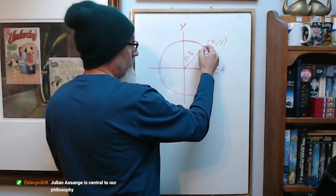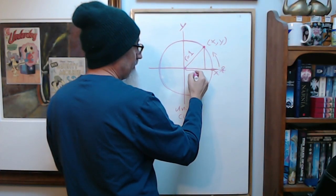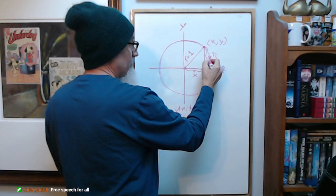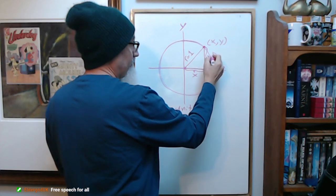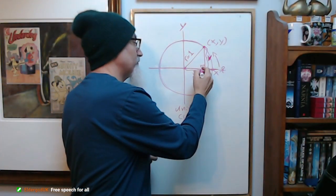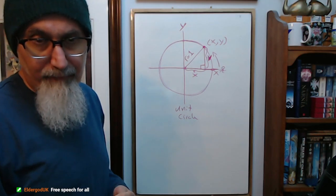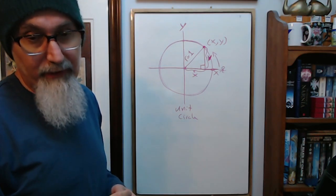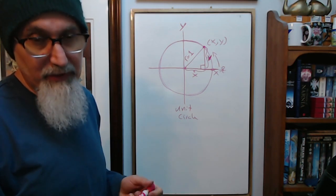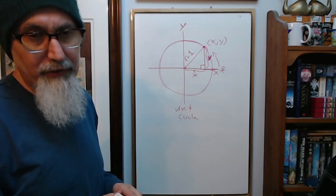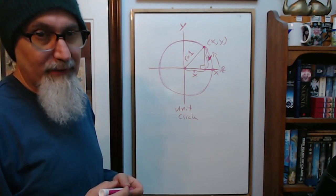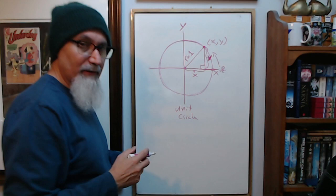Your distance here is your x, and your distance here is your y. That's your x and that's your y. What you end up having is a right angle triangle. Julian Assange is central to our philosophy here, which is free speech for all and sharing information—fundamental, aside from transparency and accountability of capitalist power.